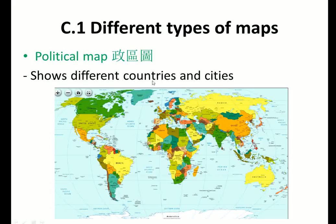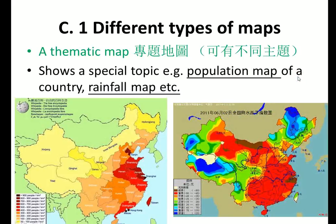The second type of map shows different countries and cities. For example, in this map we can find different countries — the largest country in the world is Russia, and you can also see China and Australia. This type shows different countries and cities.